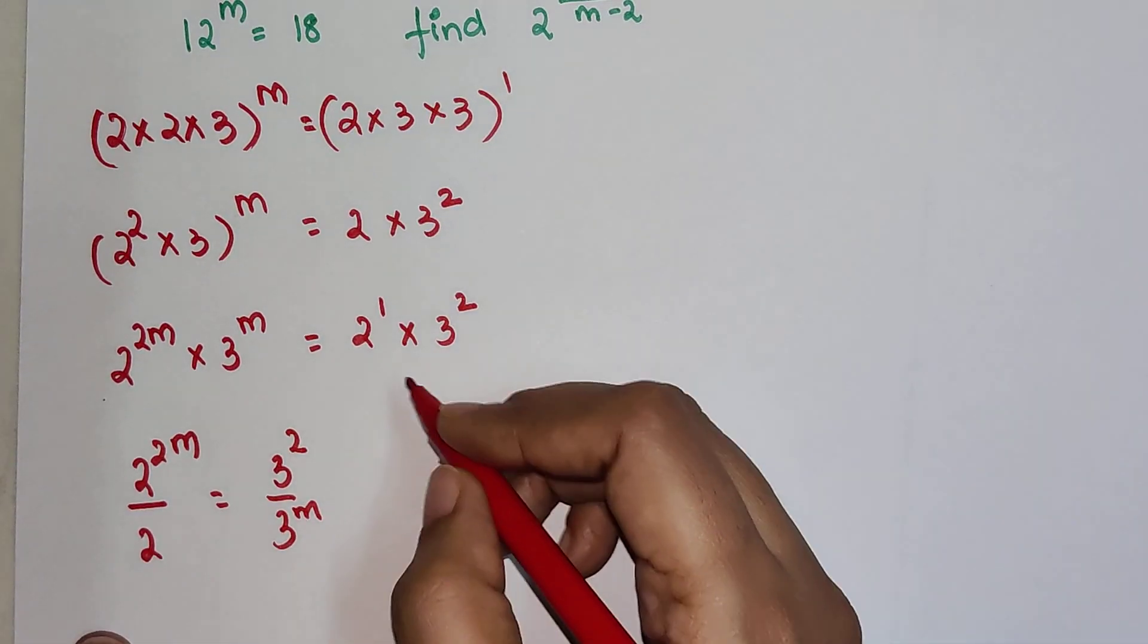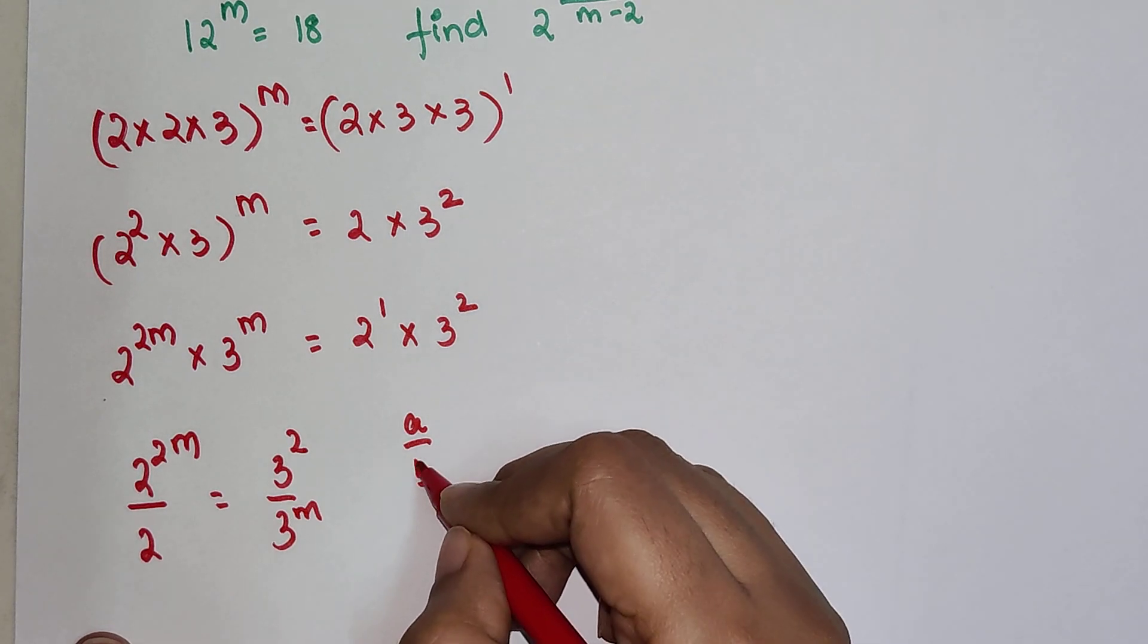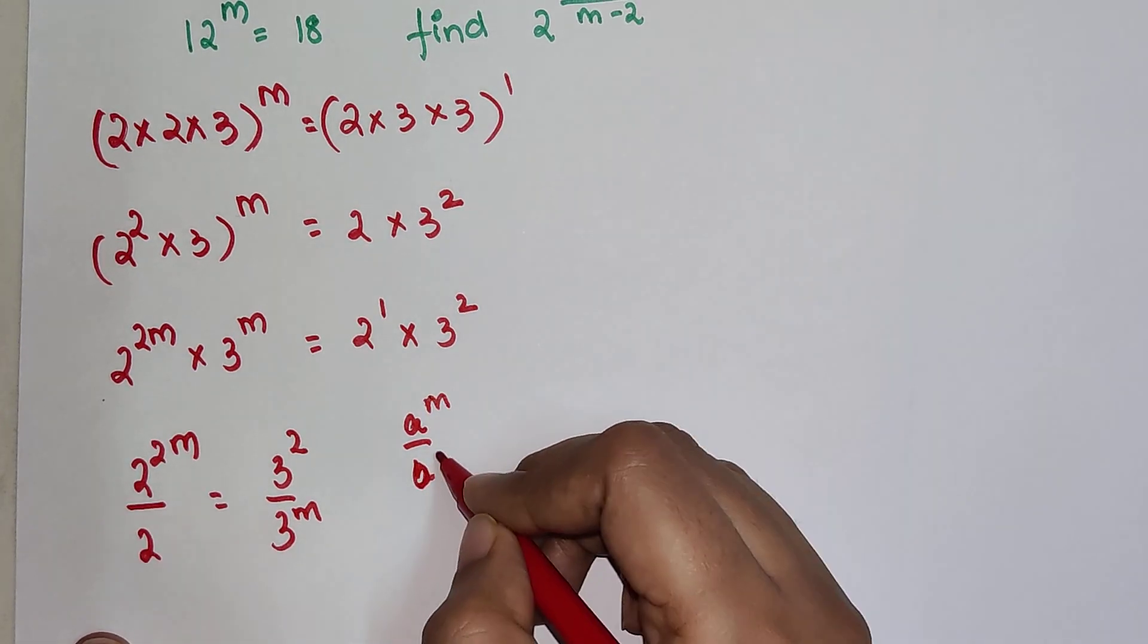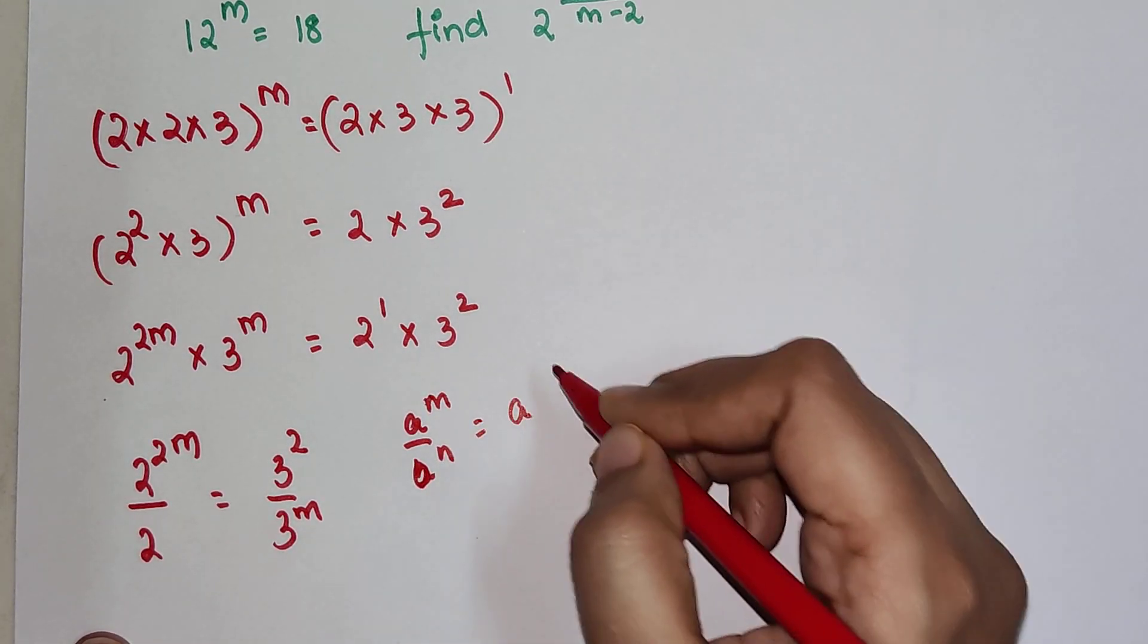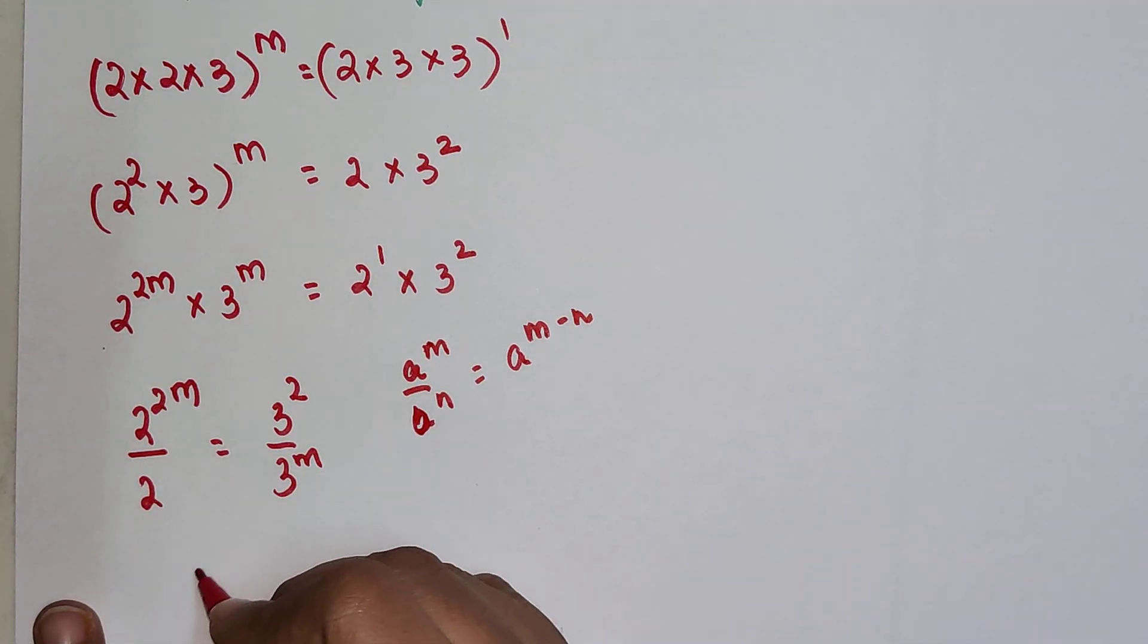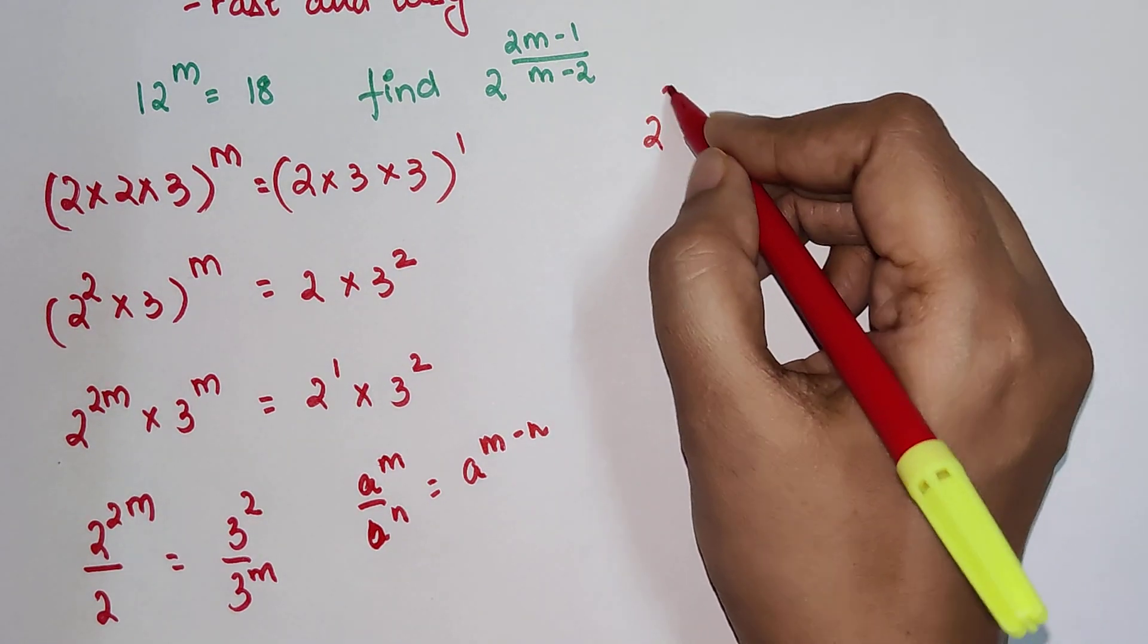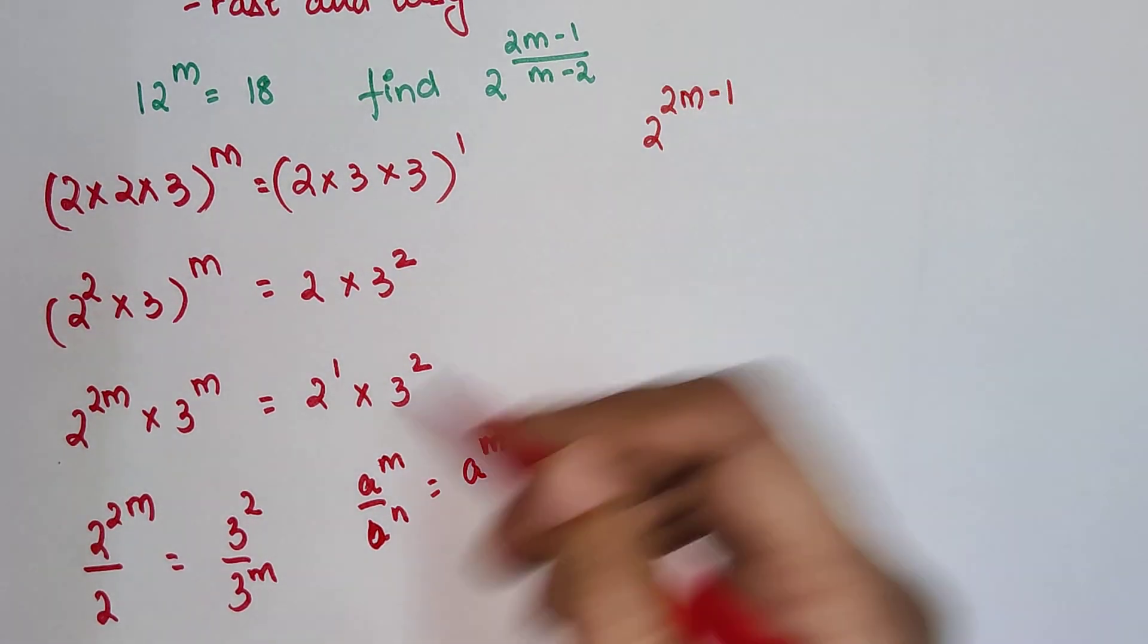Now as we know that a raised to m upon a raised to n can be written as a raised to m minus n. So I'll write this as nothing but 2 raised to 2m minus 1, because the other index was 1.